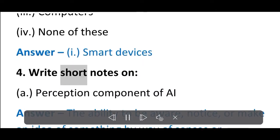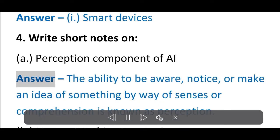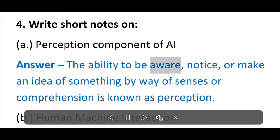4. Write short notes on: A. Perception component of AI. Answer: The ability to be aware, notice, or make an idea of something by way of senses or comprehension is known as perception.